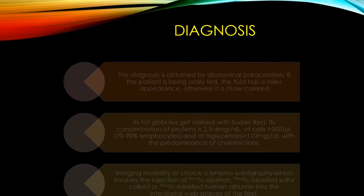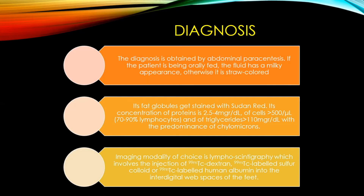Diagnosis is obtained by abdominal paracentesis. The key point is that if the patient is orally fed, the fluid has a milky appearance; otherwise it is straw colored. This is likely why previously, and even in our initial admitting unit, this child was kept fasting before undergoing pleural and ascitic fluid analysis. When the child came to our pulmonology OPD, we directly proceeded with analysis while the child was fed, and we got that milky fluid appearance. The fluid contains fat globules staining with Sudan red, is lymphocytic with 70-90% lymphocytes, and has triglyceride level greater than 110 mg/dL with predominance of chylomicrons.